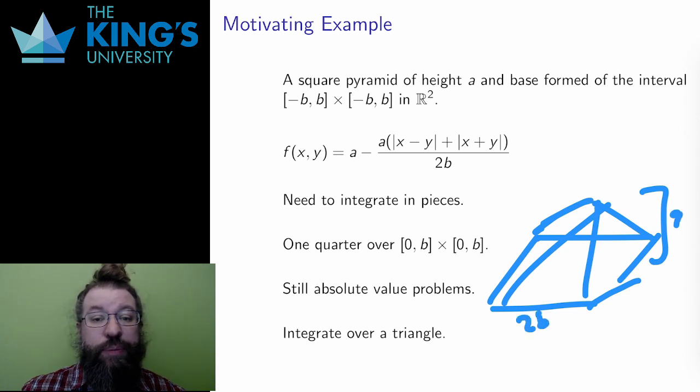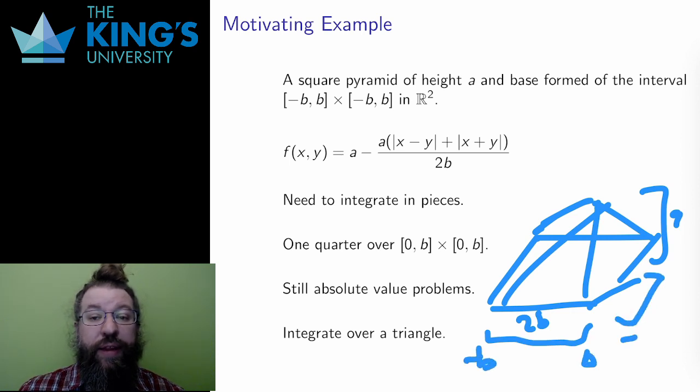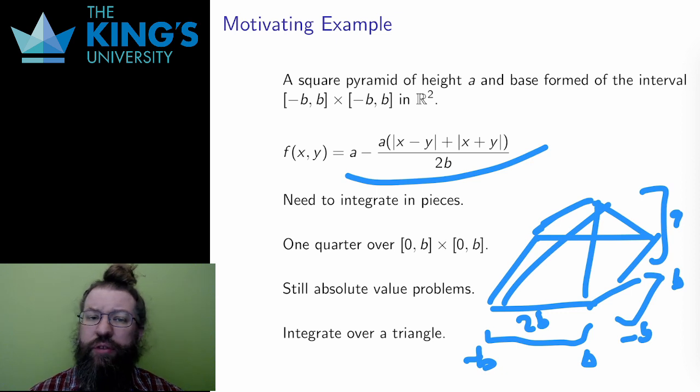Such a pyramid can be expressed as a function over the interval negative b to b times negative b to b. This is the function. The absolute value signs are necessary to give the four slopes of the pyramid. And I want to integrate to find this volume. But the absolute value signs are a problem here.